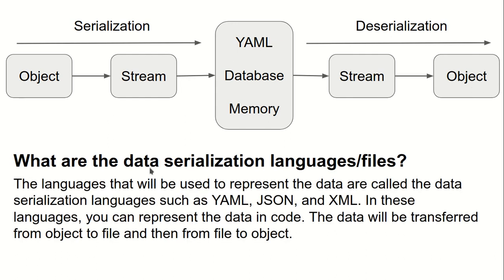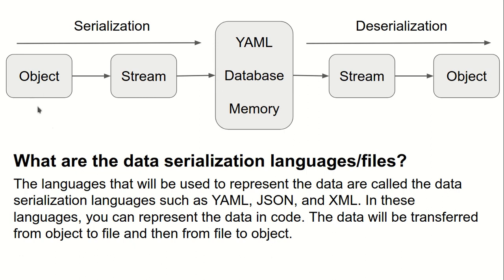So what are the data serialization languages or files? Languages used to represent data are called data serialization languages. These languages include YAML, JSON, and XML. In these languages you can represent data in code, and the data is transferred from object to file — it goes from object to stream and then reaches the file. To deserialize, the data transfers from file back to object.